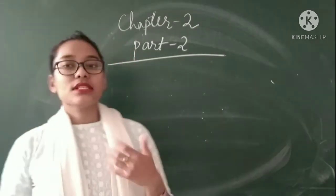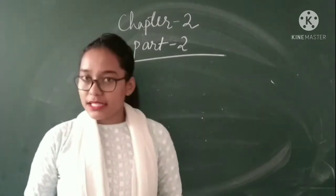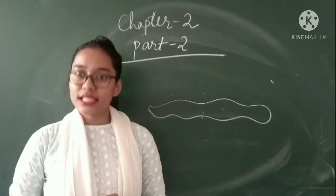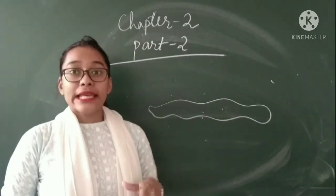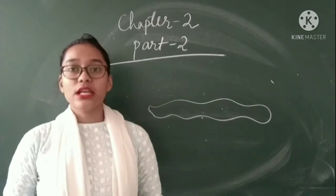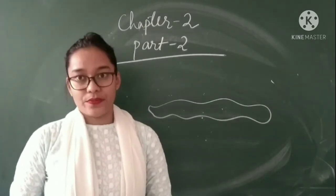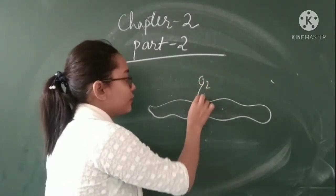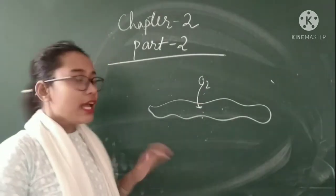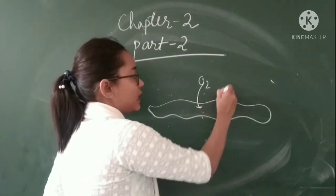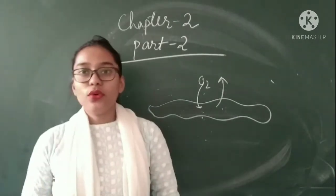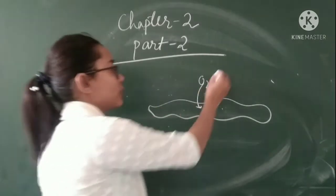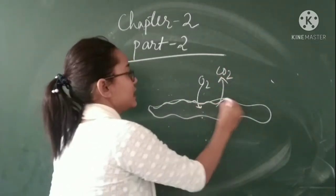Some animals like earthworm and frogs breathe through their skin. Let us take an example of earthworm. Earthworms have very soft and moist skin, so they breathe through their skin. They breathe through the process of diffusion. Diffusion means they take up oxygen directly from the environment and release carbon dioxide - just like we humans take oxygen and breathe out carbon dioxide. So likewise they breathe out carbon dioxide through their moist skin.